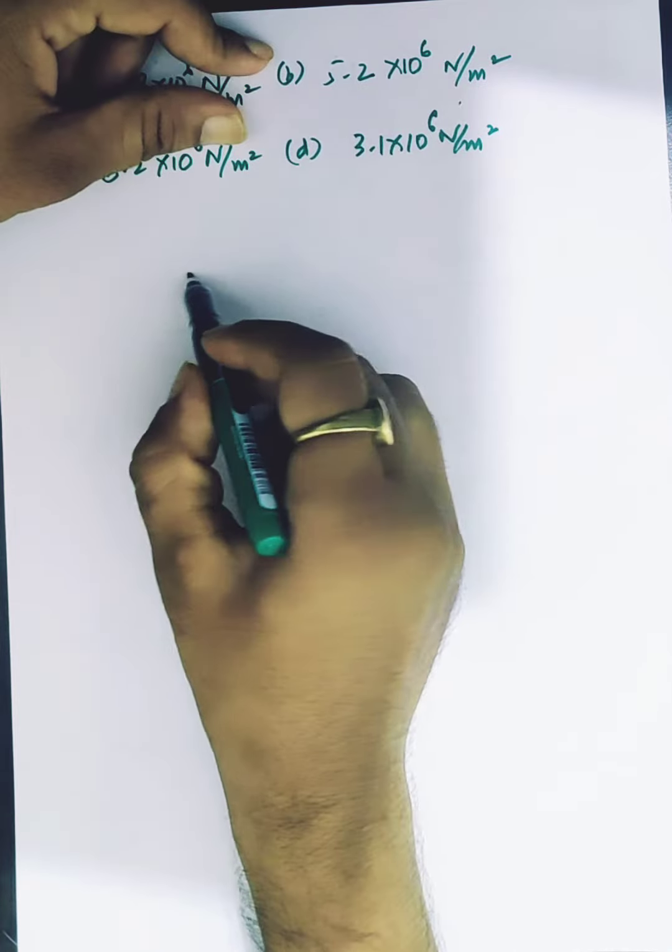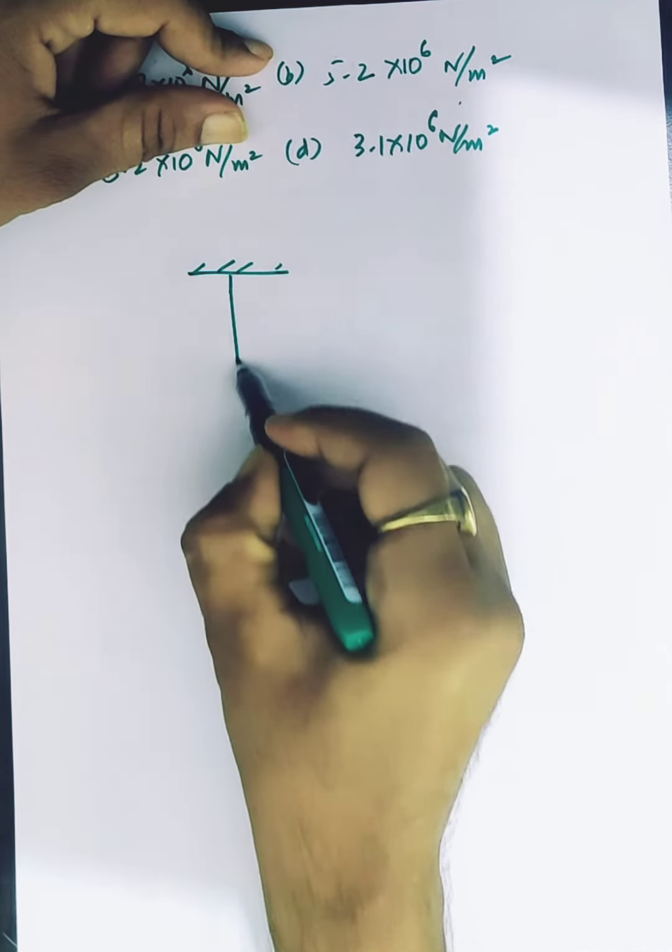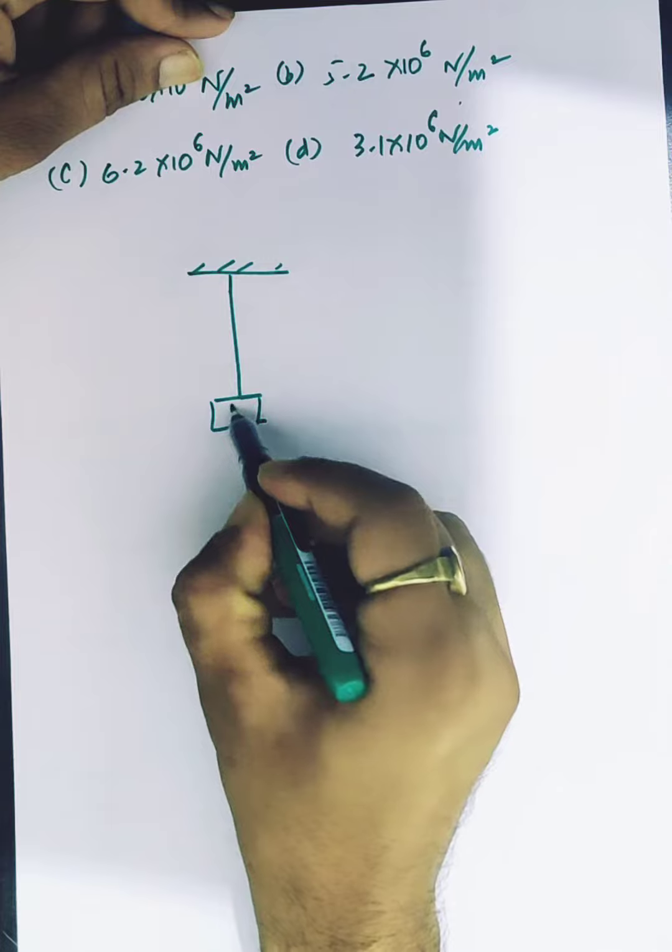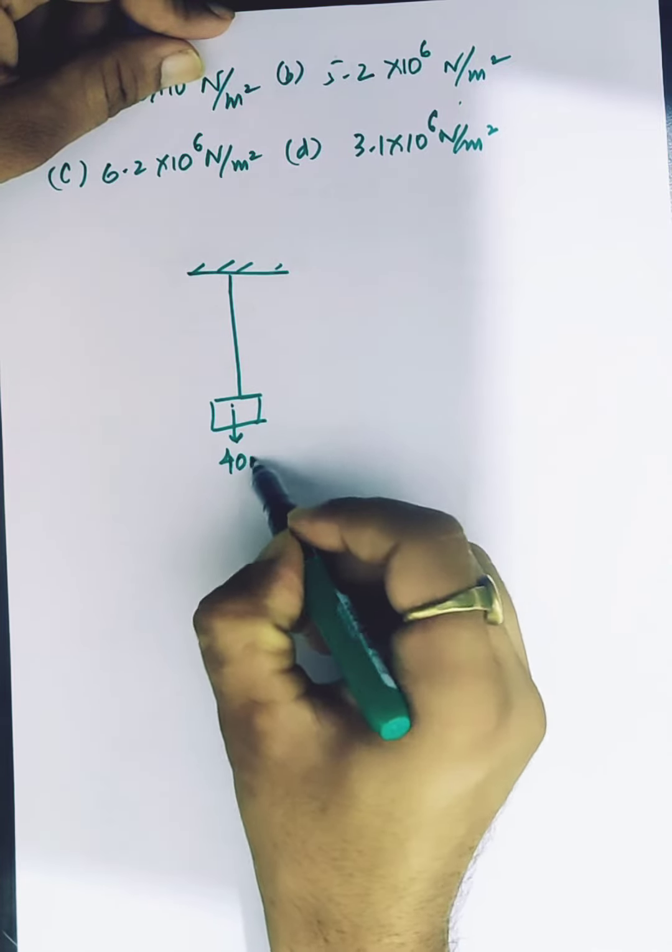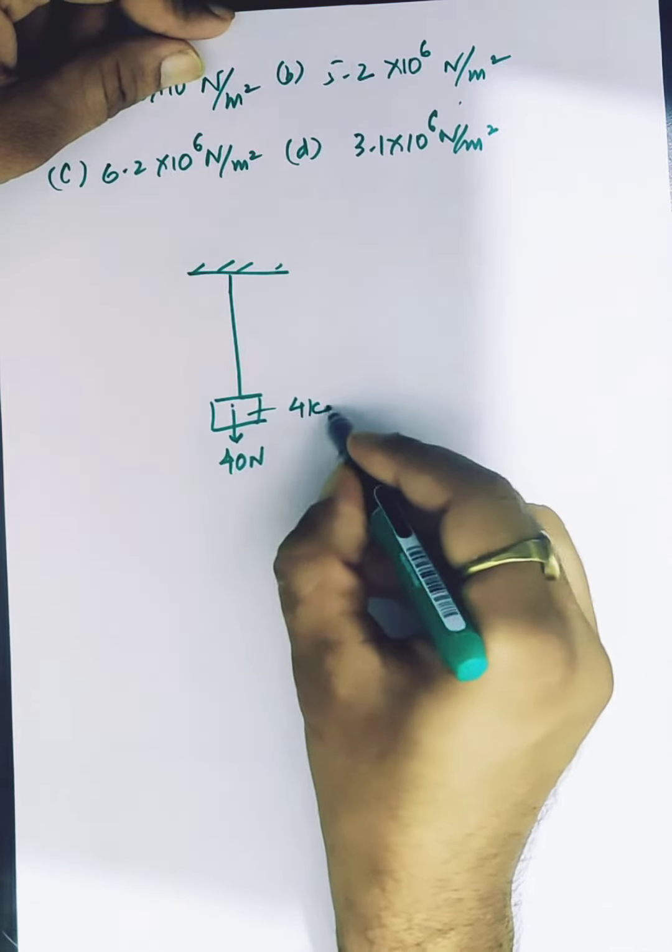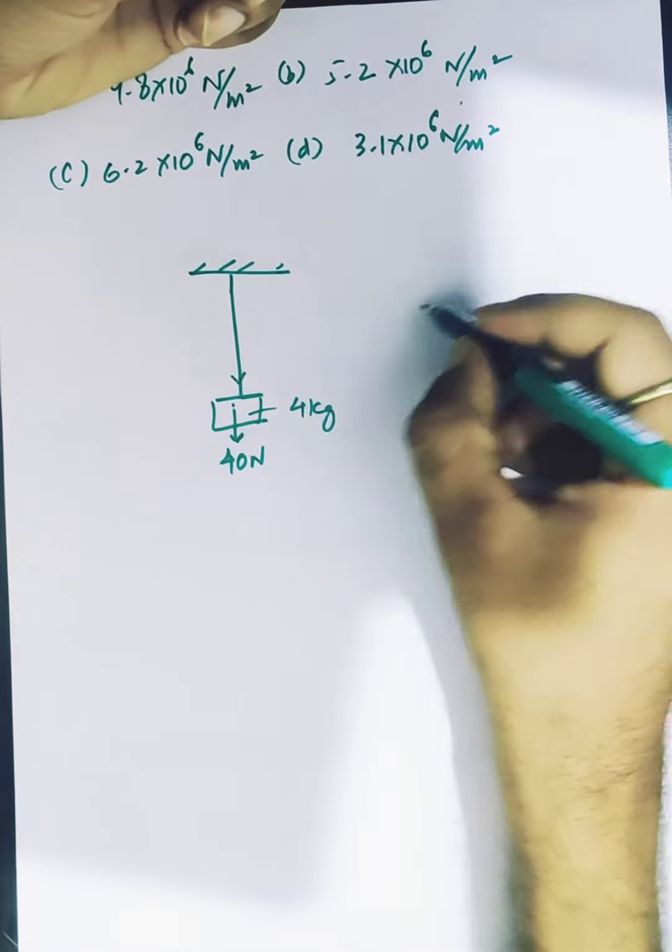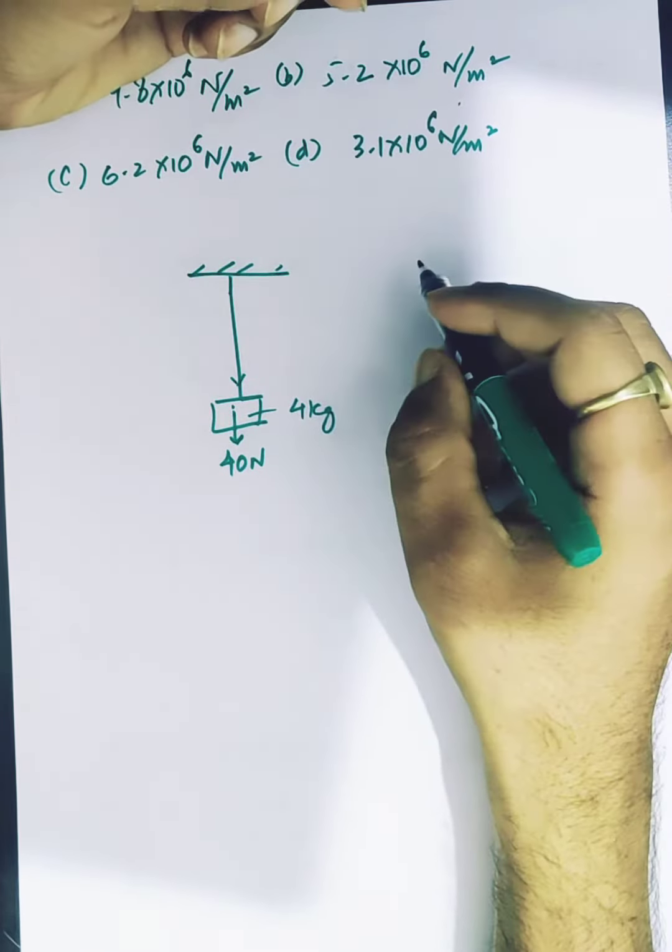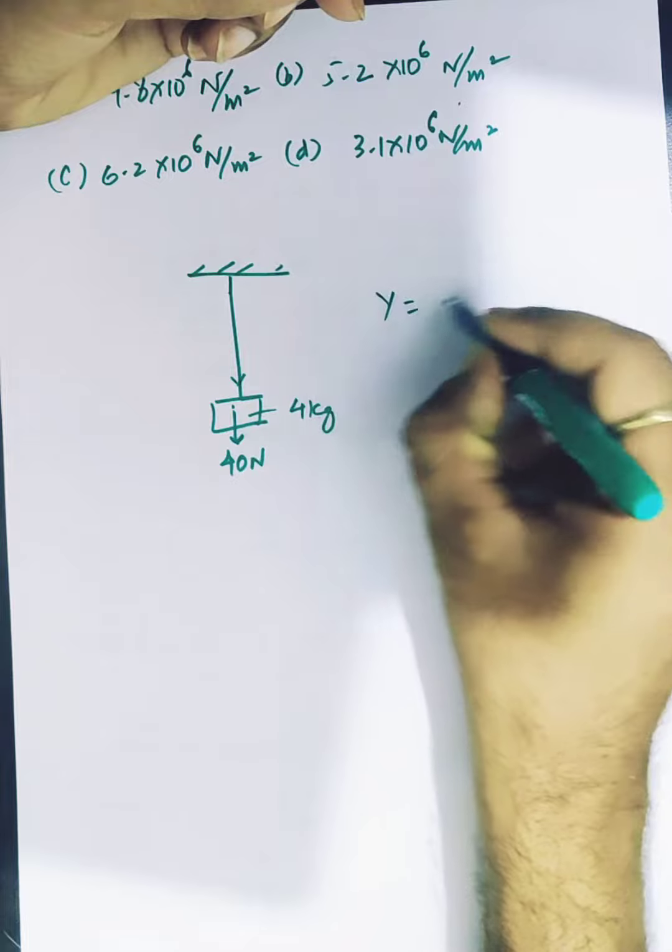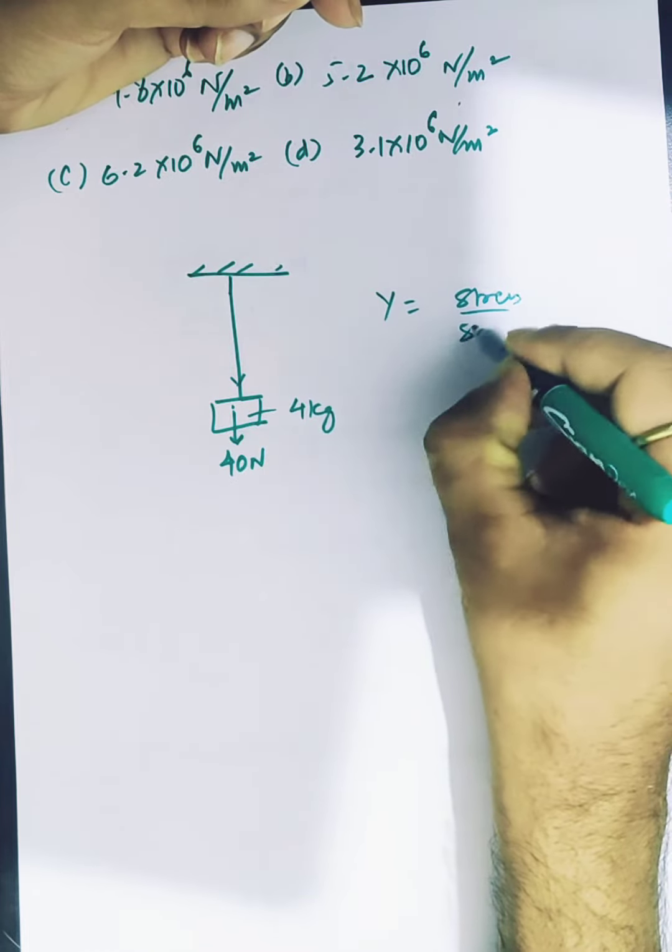of 4 kg hanging from ceiling. At the bottom, 40 newtons force - that's the 4 kg weight. Now we need to find out the tensile stress. Young's modulus is stress upon strain, and we need to use radius and mass.